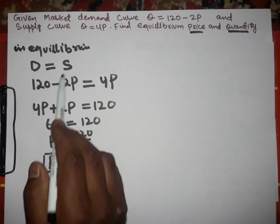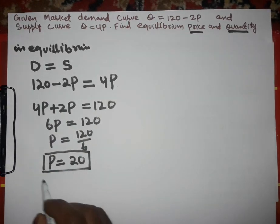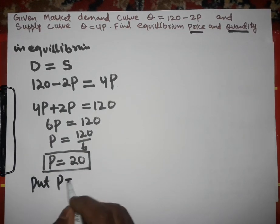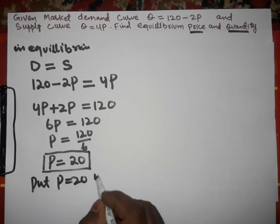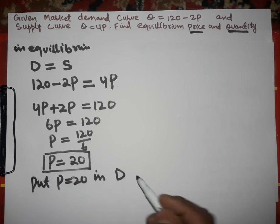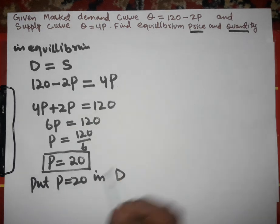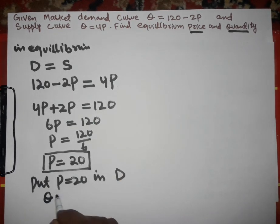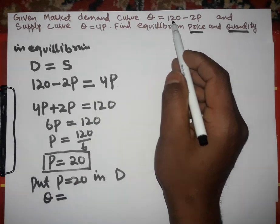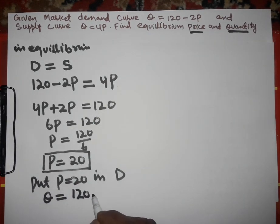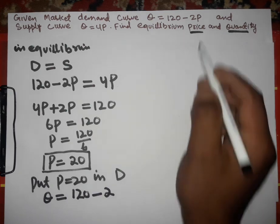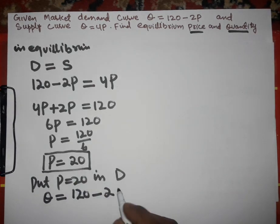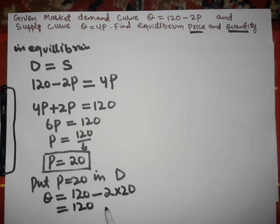Now for the equilibrium quantity, we insert P = 20 either into the demand function or the supply function. Putting P = 20 into the demand function: Q = 120 - 2 × 20.